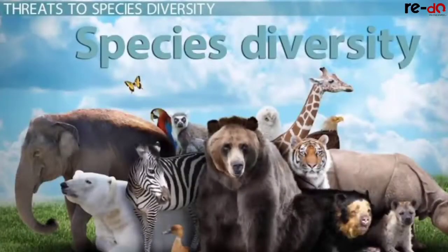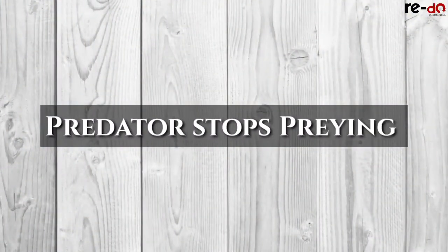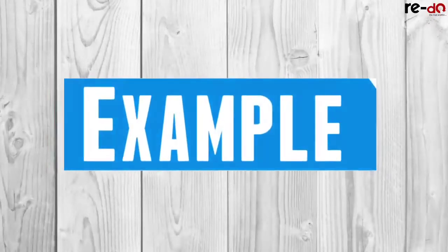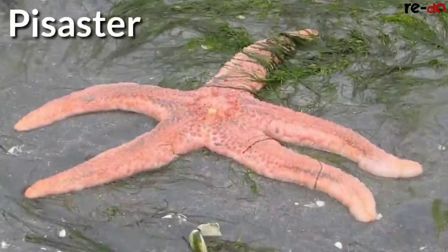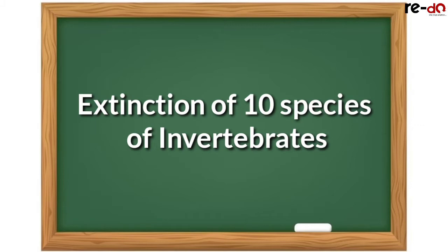Another very important aspect of predators is that they help in maintaining species diversity. A particular predator will prey on specific organisms only. A very common example of this is a starfish known as Pisaster. This starfish was removed from the American Pacific coast, which led to the extinction of almost 10 species of invertebrates on which this predator was preying. So due to the removal of the particular predator, 10 species started competing with each other for survival, as a result of which they became extinct. This is the effect the absence of a predator can have on species diversity.